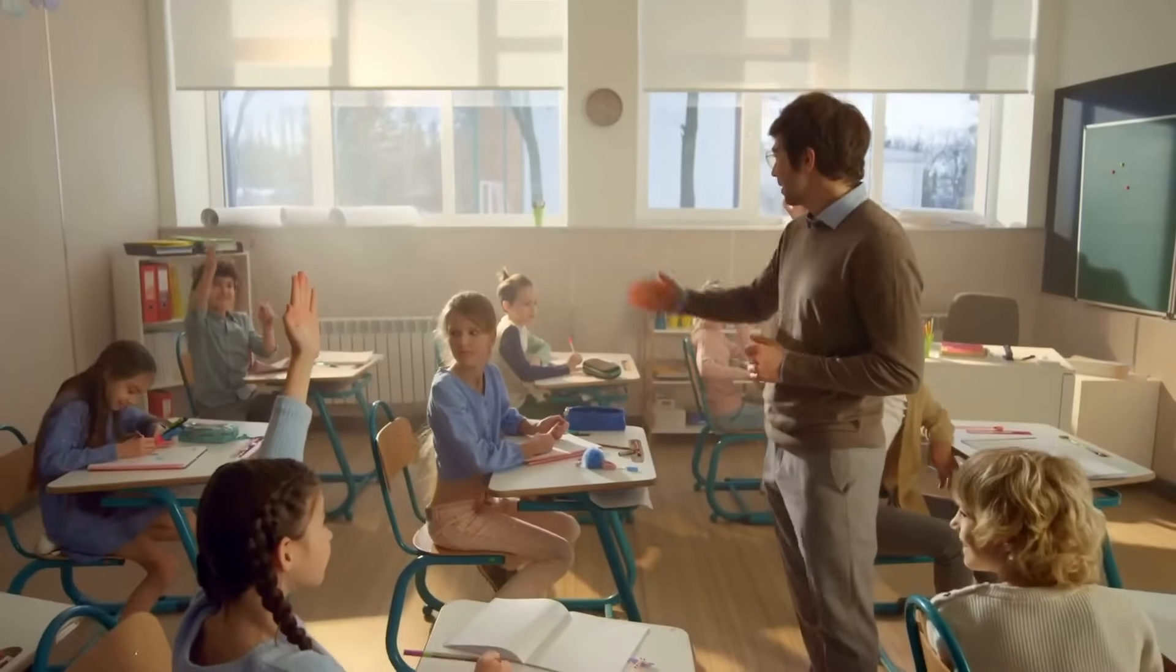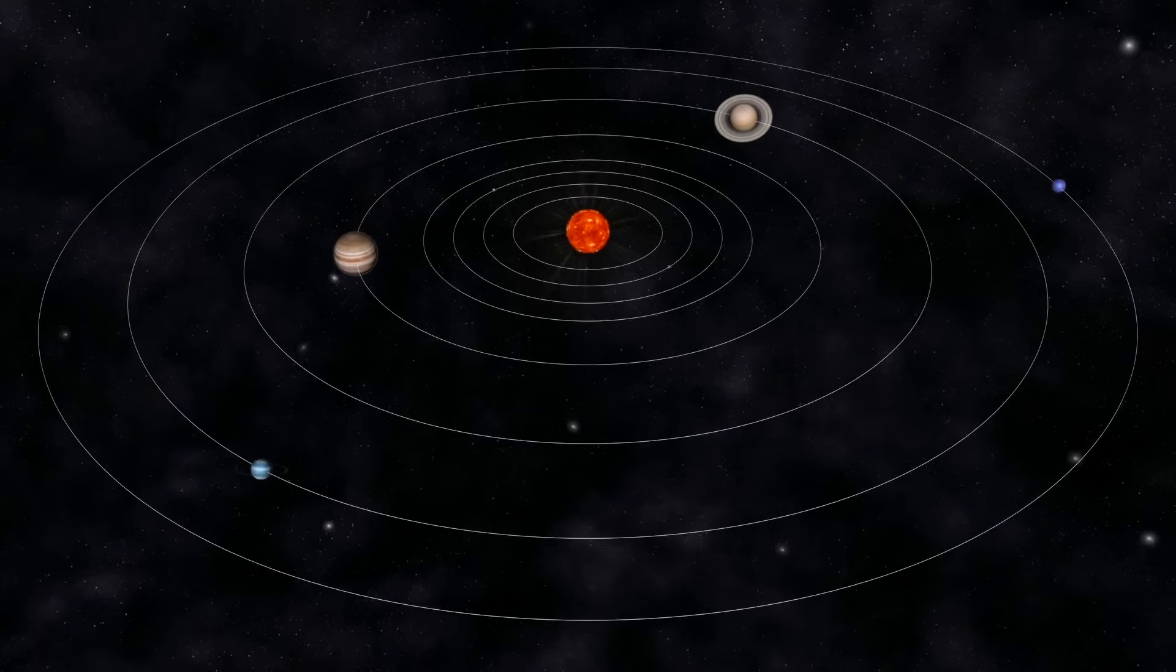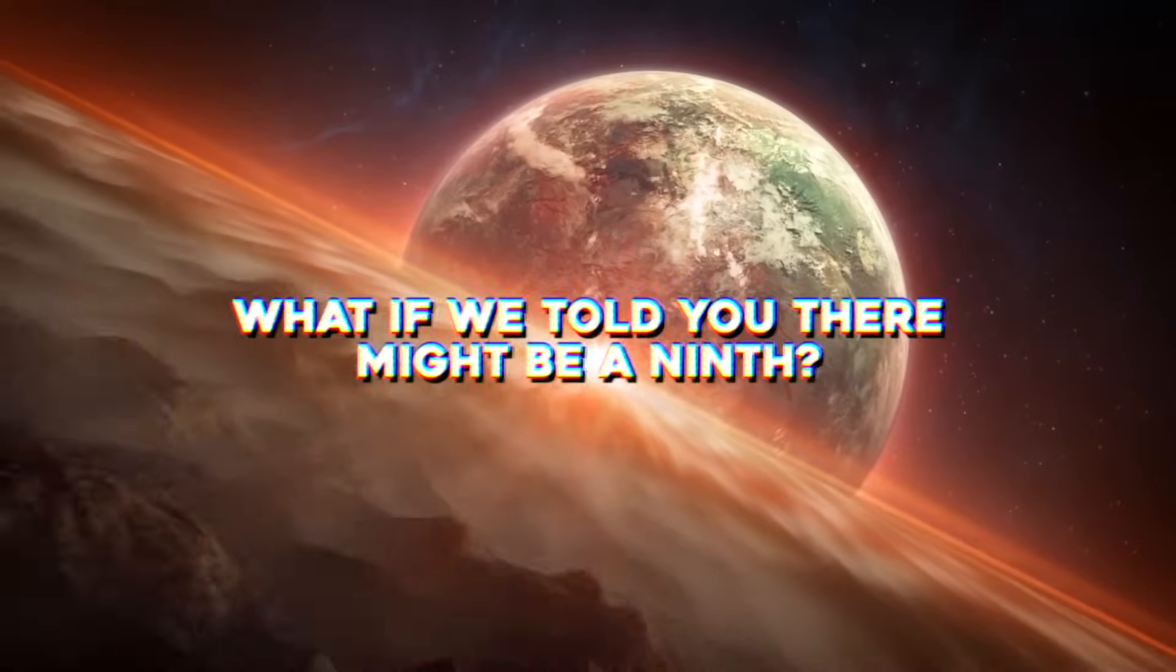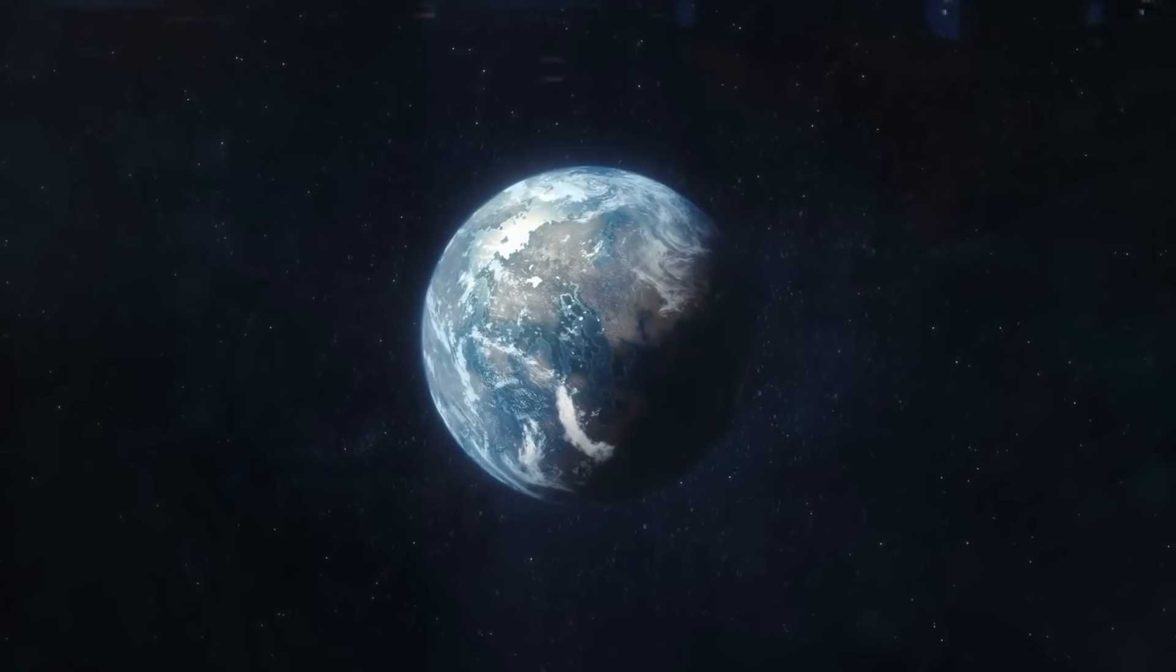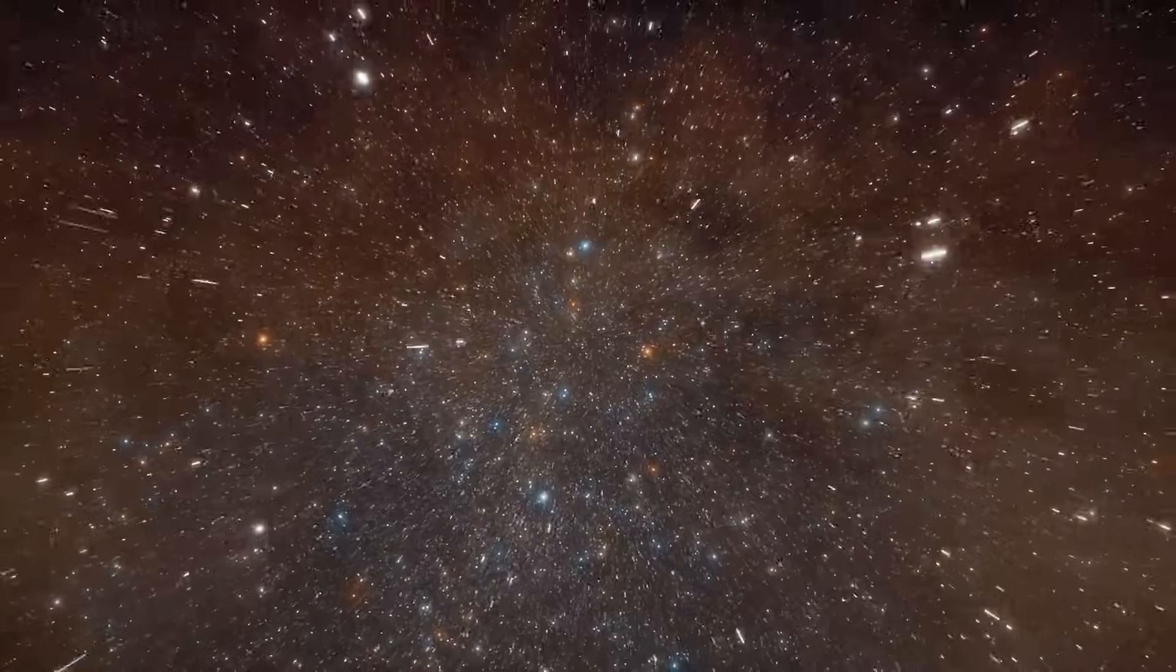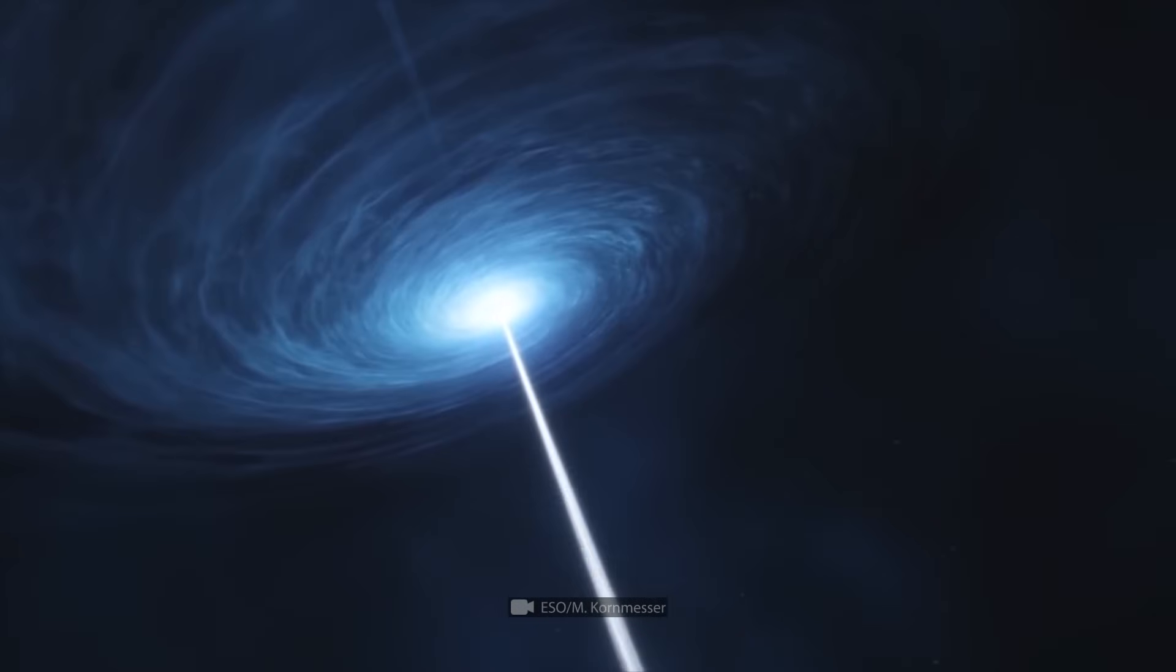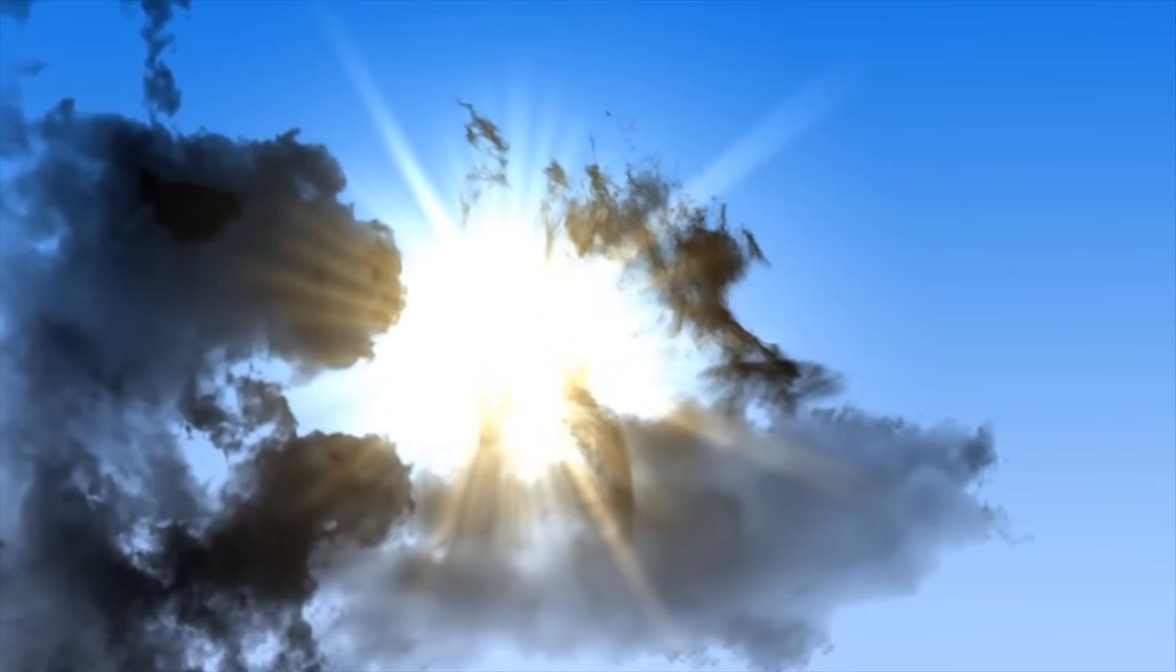Every school kid learns that there are exactly eight planets in our solar system, but what if we told you there might be a ninth? A world that may be six times the size of Earth and take 12,000 years to orbit the sun.